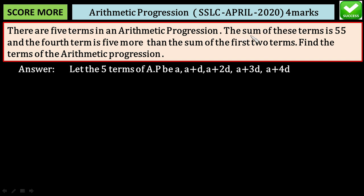The sum of these terms is 55. Add them up equal to 55. We get 5a plus 10d equals 55. Then divide the equation by 5, we get a+2d=11. Let this be equation 1.